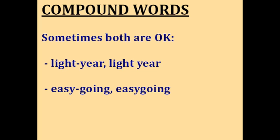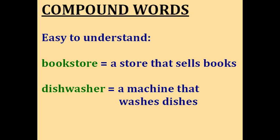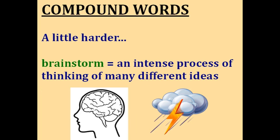Some words have more than one form. For some words, both the open form and the hyphenated forms are acceptable, as in the word light year — the distance that light can travel in a year. And for some words, both the hyphenated and the closed form are acceptable, as in the word easygoing, which means relaxed. Sometimes compound words are easy to understand. A bookstore is a store that sells books. And a dishwasher is a machine that washes dishes. But others might not be so obvious. For example, brainstorm — to brainstorm is an intense process where you think of many different ideas in the hopes of getting a good idea. You can see it comes from the words brain and storm. When there's a thunderstorm, it rains a lot, and in the same way, when you brainstorm, you think of a lot of ideas.